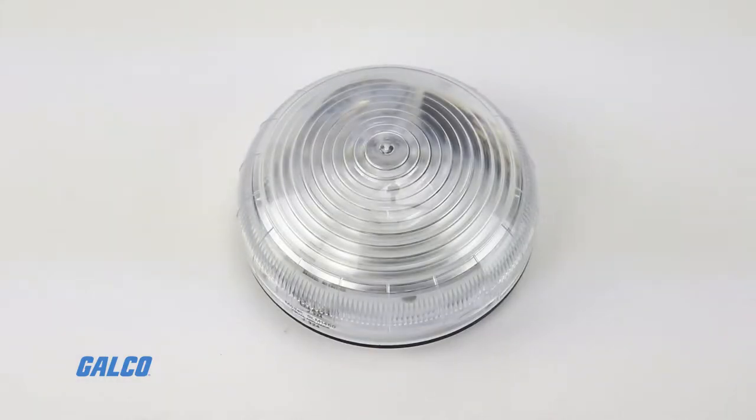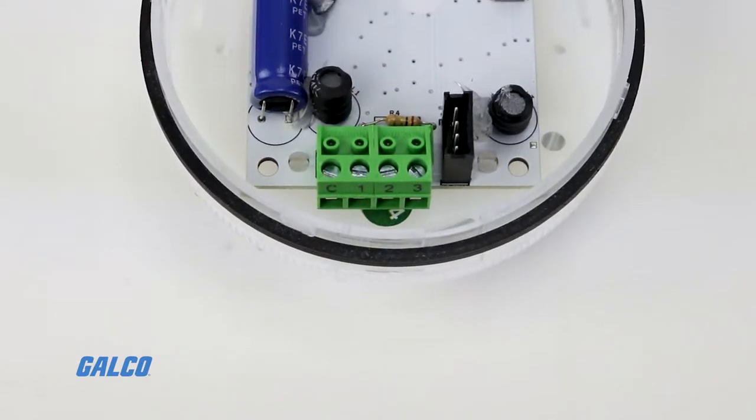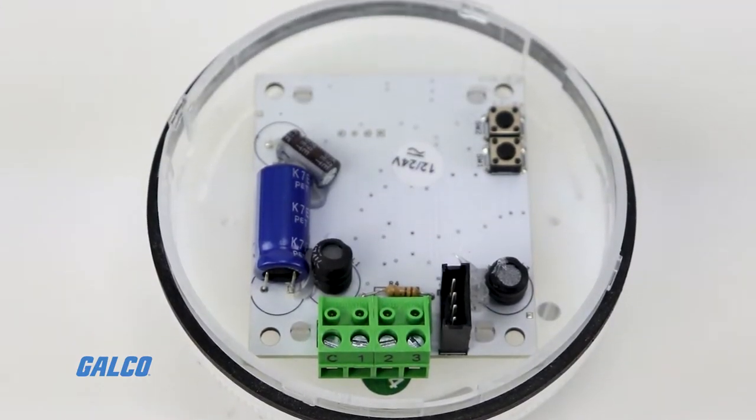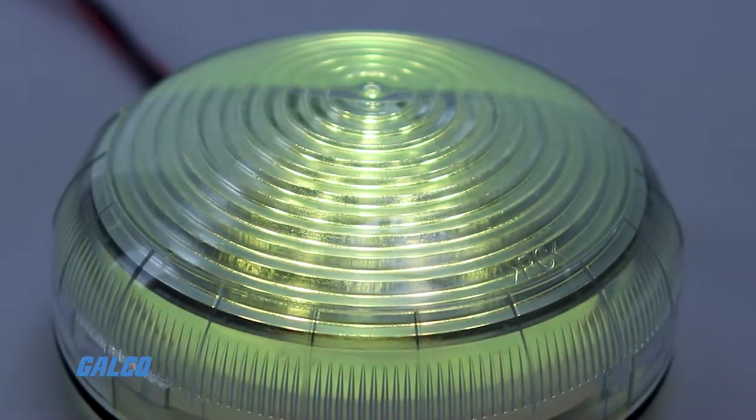The SLM1450 Streamline from Federal Signal is a modular, multi-color low-profile LED beacon with multiple built-in functions for signaling and alerts in industrial environments.